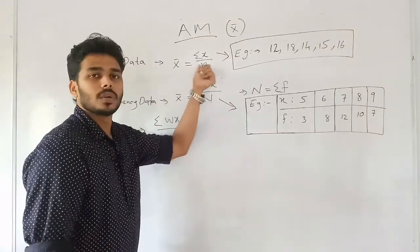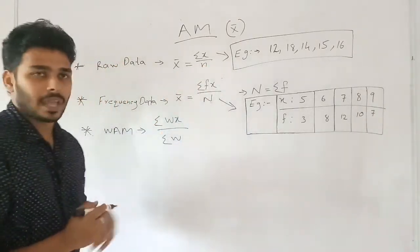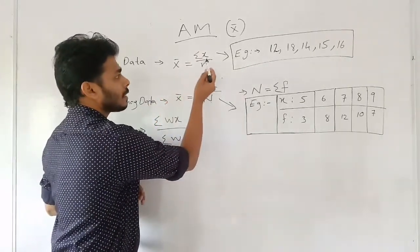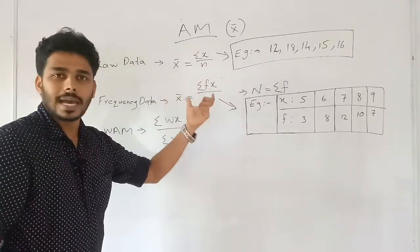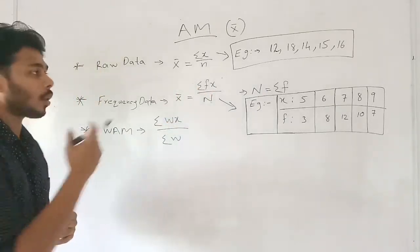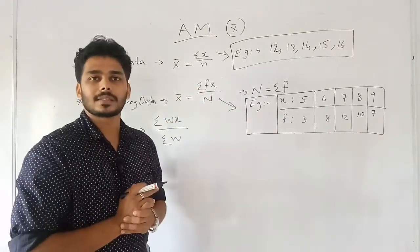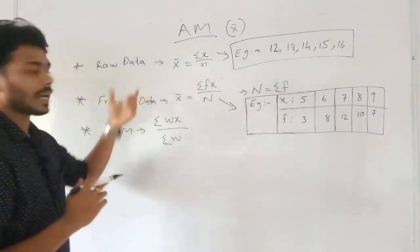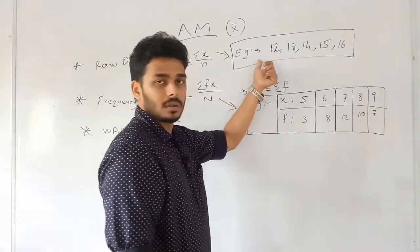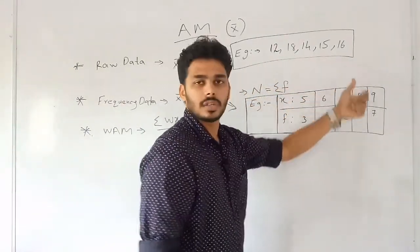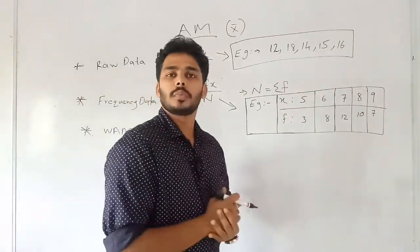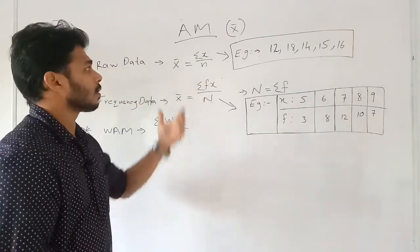For raw data, the formula is x̄ = Σx / n. That is, the summation of all observations divided by n, the total number of observations. For example, raw data: 12, 18, 14, 15, 16 — these are ungrouped data values.